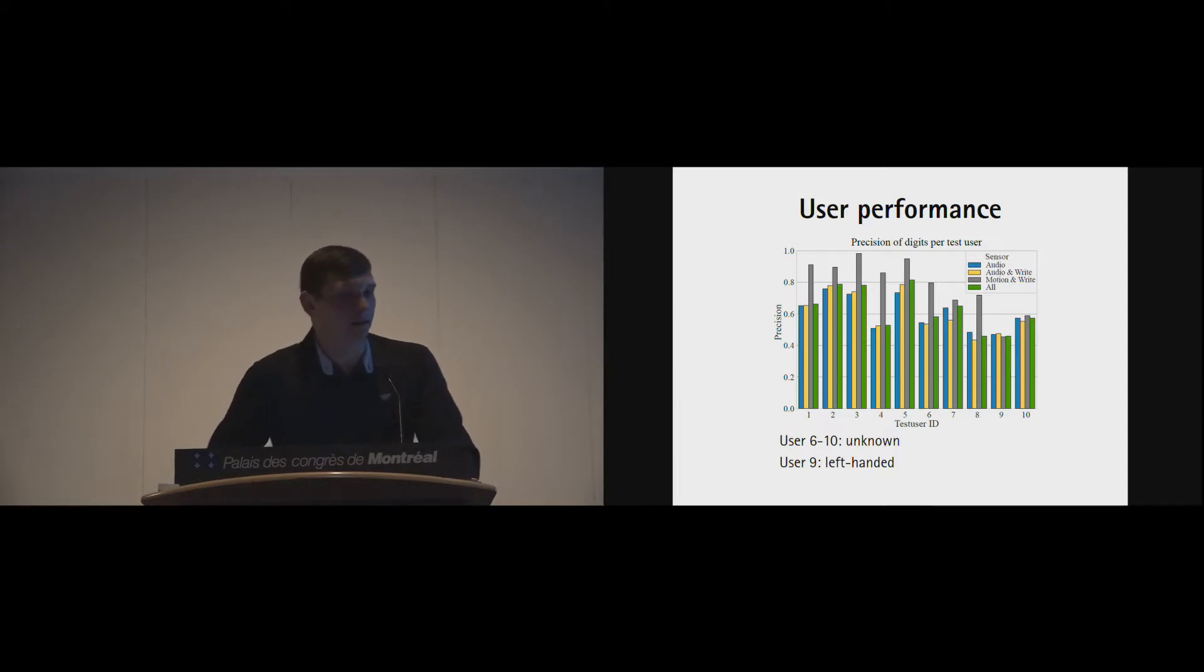Then we looked at our participants. Users 1 to 5 were previously known to the classifiers. If we knew our handwriting already, the accuracies would increase. But if they are completely new, the accuracies decrease below 80%. What was also interesting is that user 9 is the only one who was left-handed. He is the only one where audio performs slightly better than motion. This is mainly because when you hold the pen with the right side, it's different to the left side. So that's a problem with motion data.